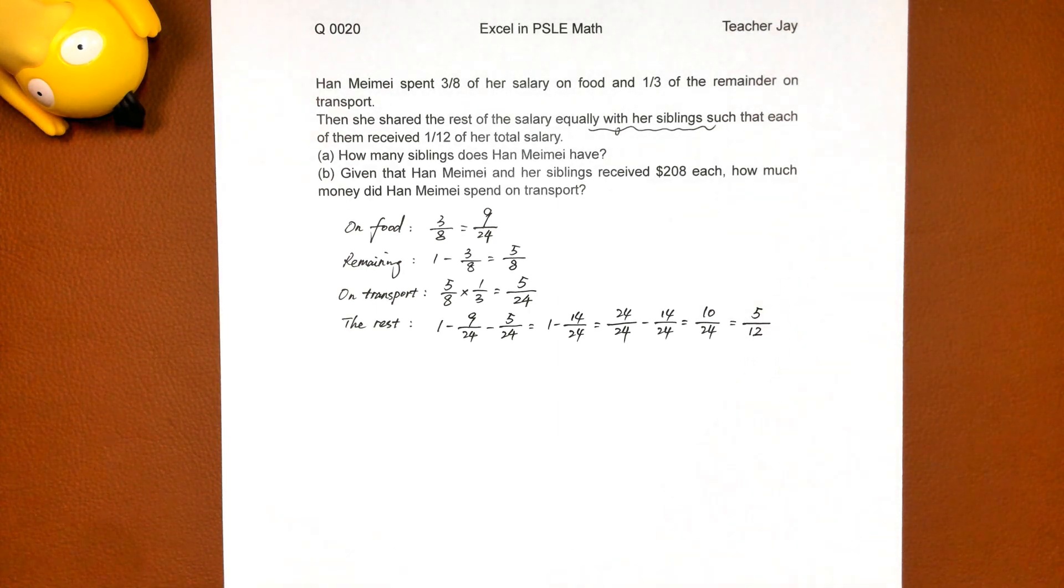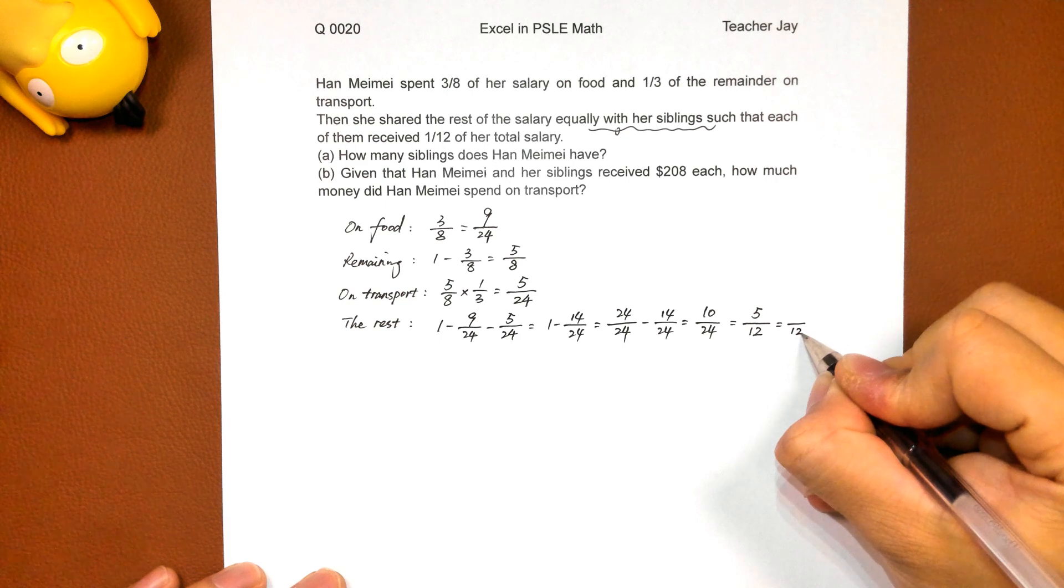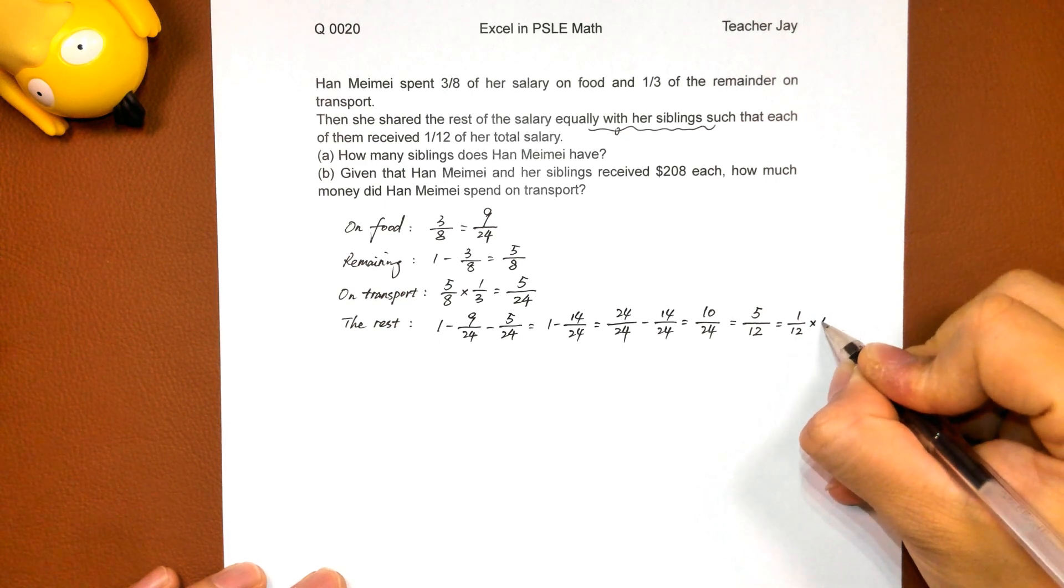And five over twelve equals one over twelve times five.